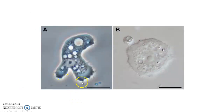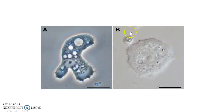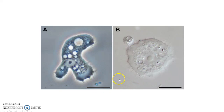This picture shows the trophozoite stage of Acanthamoeba and the cyst form of Acanthamoeba. Acanthamoeba exists in these two forms: the trophozoite form and the cyst form.